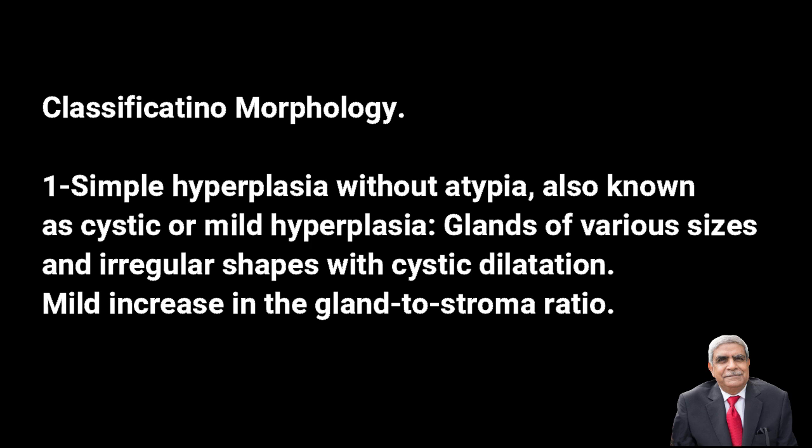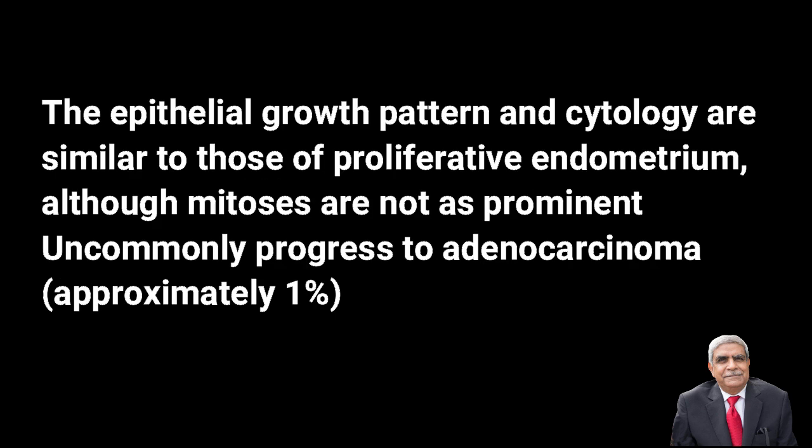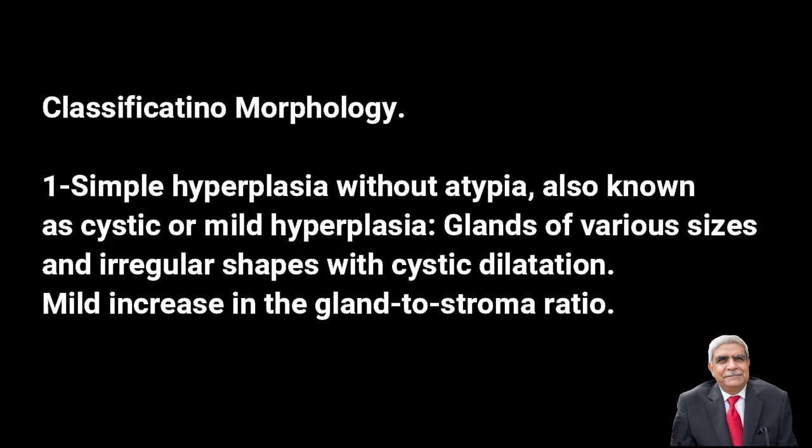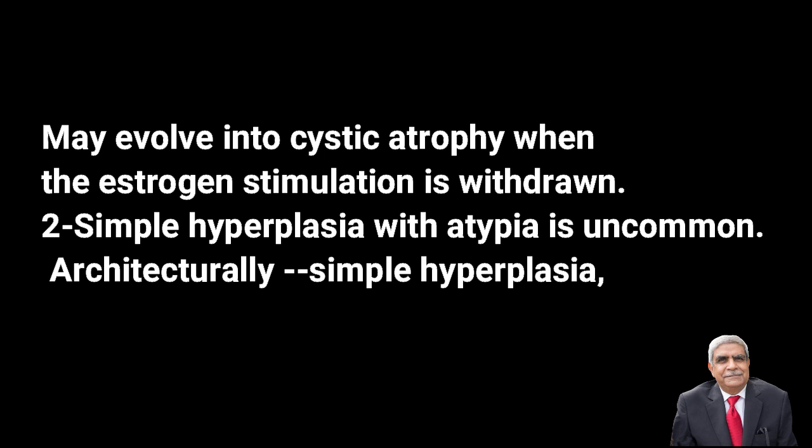The first type is simple endometrial hyperplasia without atypia, also known as cystic or mild endometrial hyperplasia. In this condition, the glands are of variable sizes, irregular in shape, and some show cystic dilatation. The epithelial growth pattern and cytological features are similar to proliferative endometrium, with mitoses not very prominent. Only one percent of these progress to adenocarcinoma, and many glands may undergo cystic atrophy when estrogen stimulation is withdrawn.